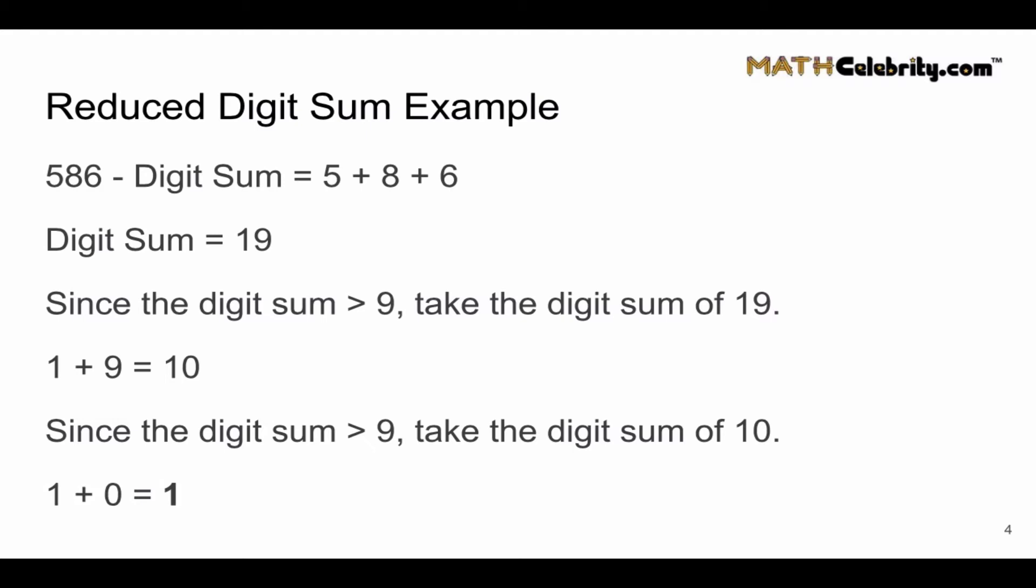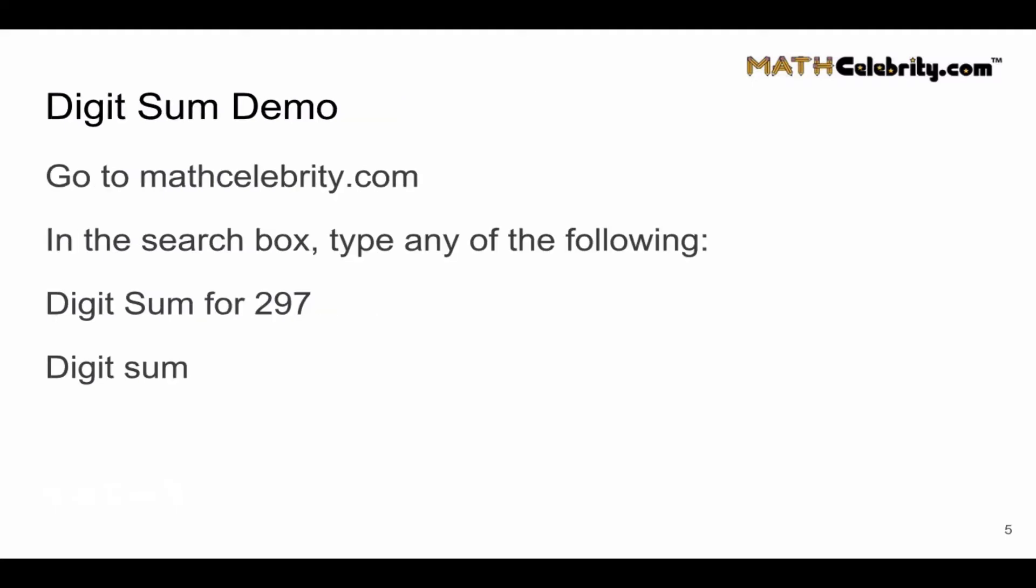Now you see the difference between the reduced digit sum and the digit sum is we're going to keep doing the digit sum until we get 9 or less for our digit sum. That is your reduced digit sum. Say that five times fast. Alright, let's bring it home here.